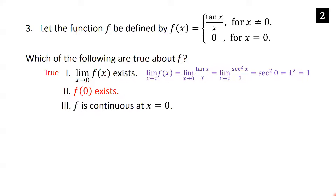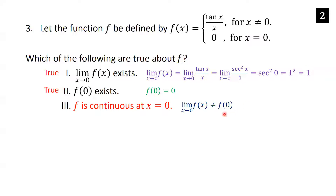For part two, does f(0) exist? Yes — the definition states f(x) = 0 when x = 0, so f(0) = 0 exists. For part three, is f continuous at x = 0? The limit as x→0 of f(x) is 1, but f(0) = 0. Since the limit and the function value are not equal, f is not continuous at x = 0 — that statement is false.